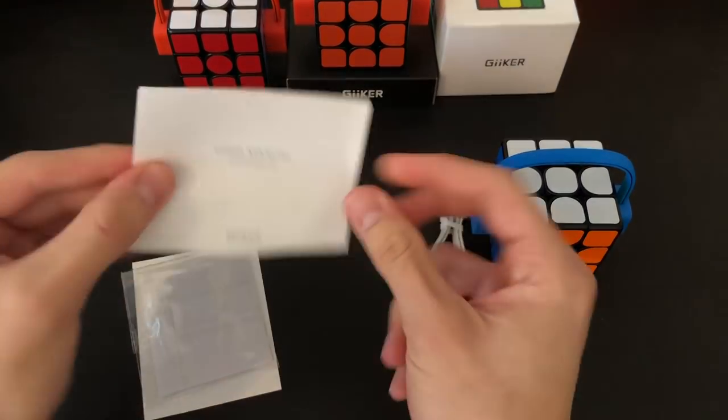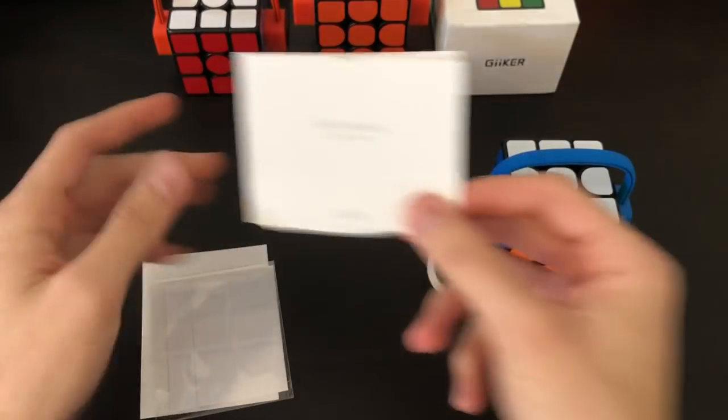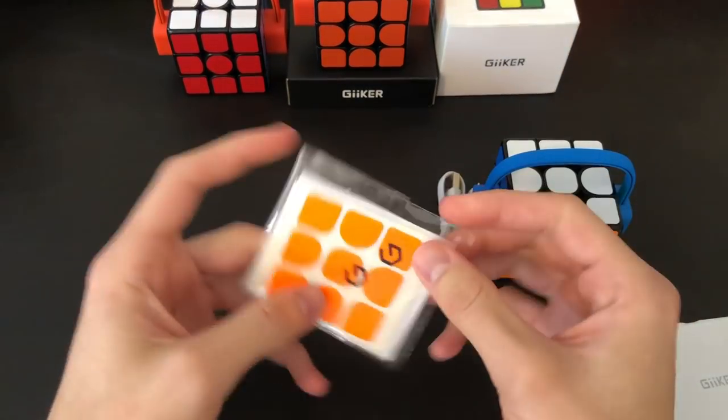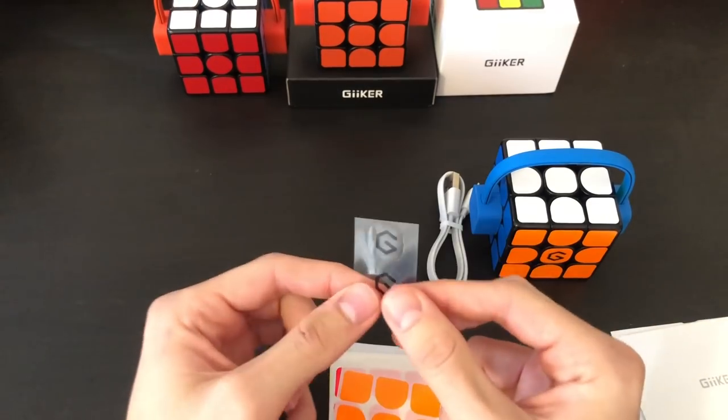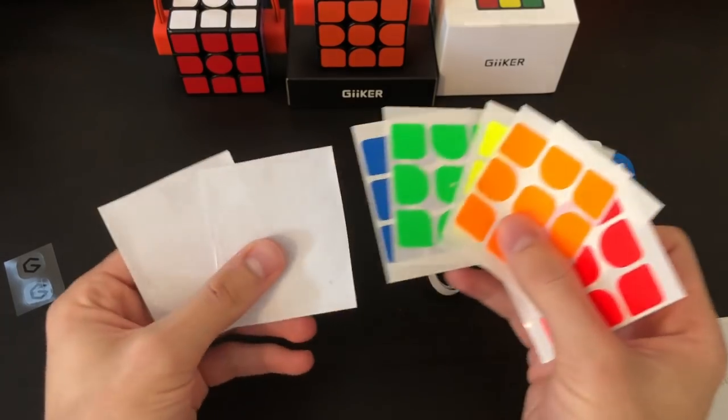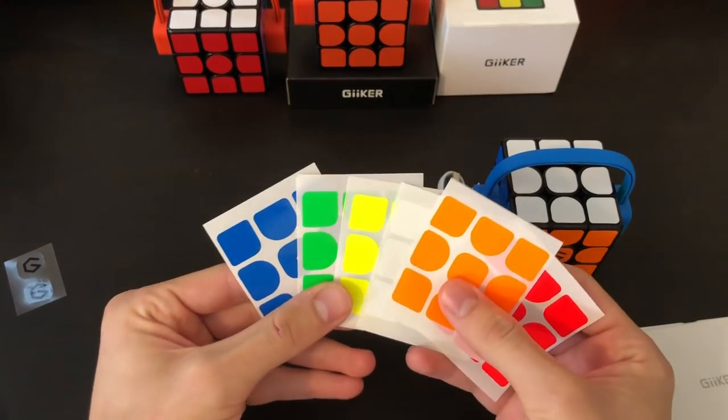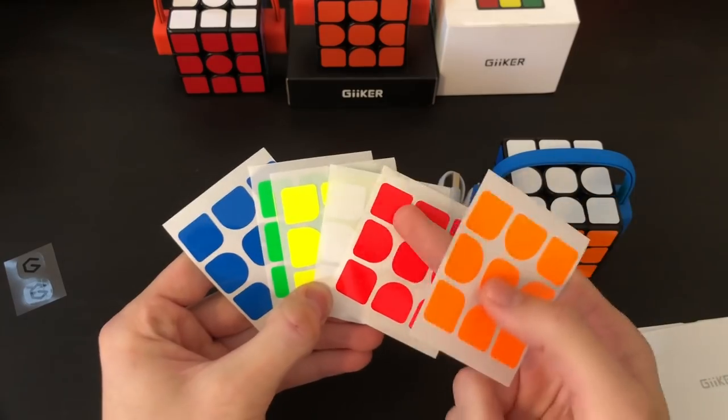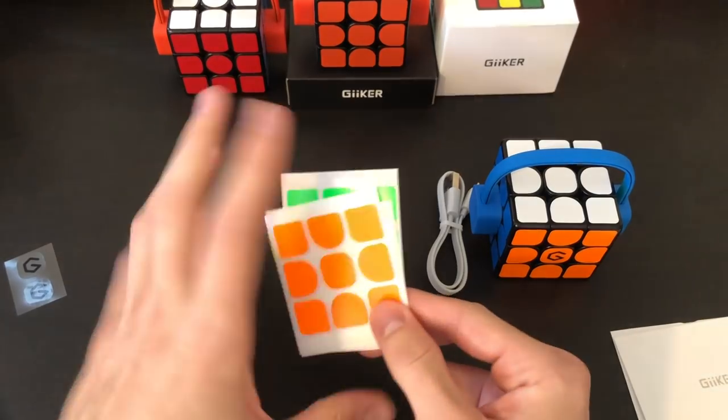And here we have the user manual, which does have English on it, which is nice. The previous one did not. It comes with a Chinese one as well. And then we have stickers and logos. Let's go ahead and look at these shades. So here we have the logos. And then as for these sticker shades, we just have some pretty bright stickers. We have a pretty bright green, a fluorescent yellow, a bright orange, a little bit of a brighter red than I'm used to, and a regular blue and a regular white. So the normal color scheme.